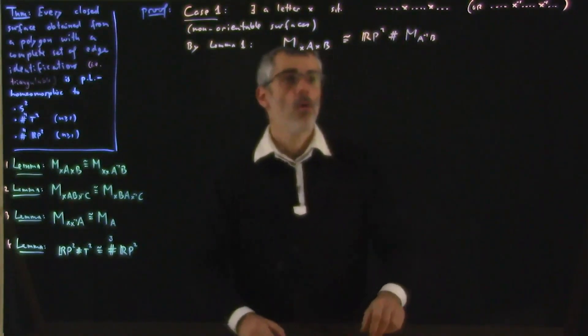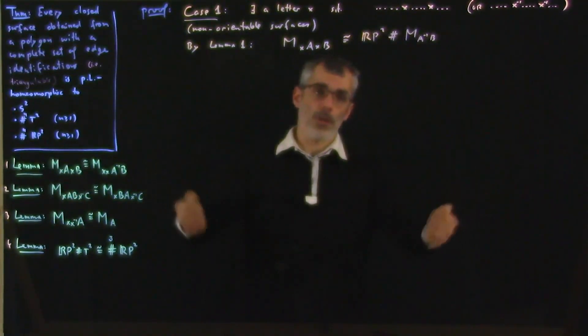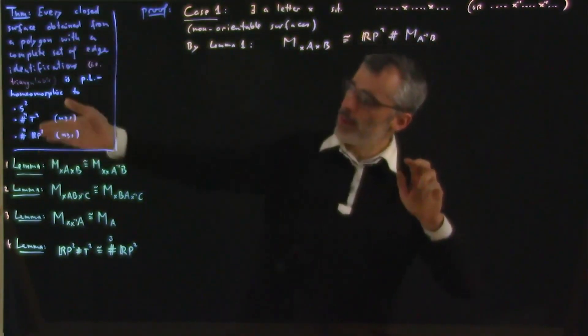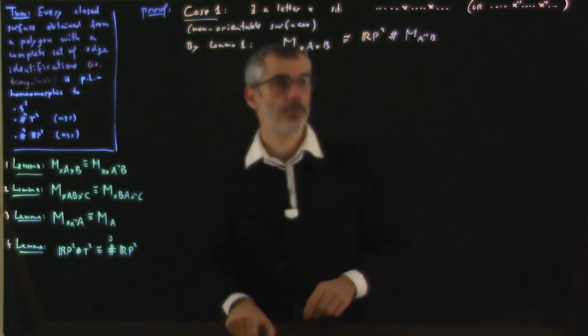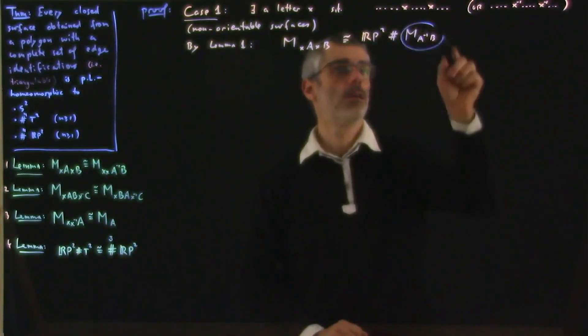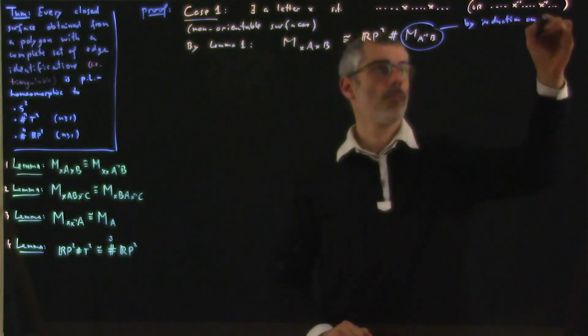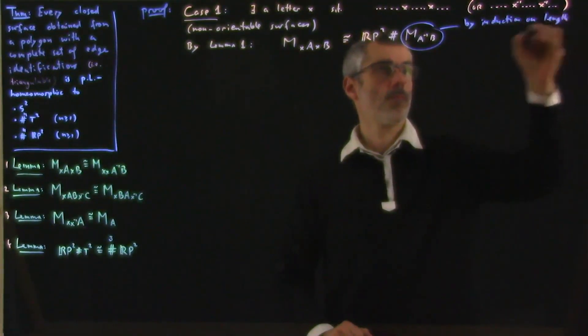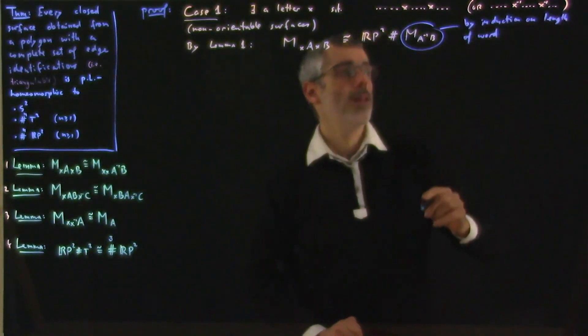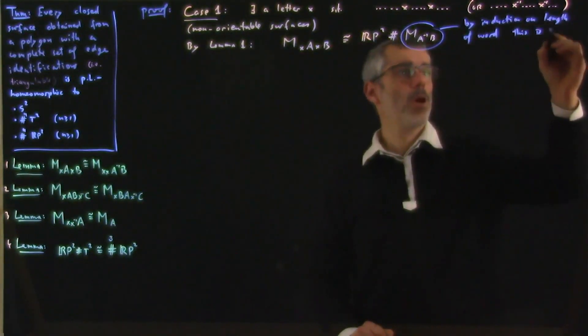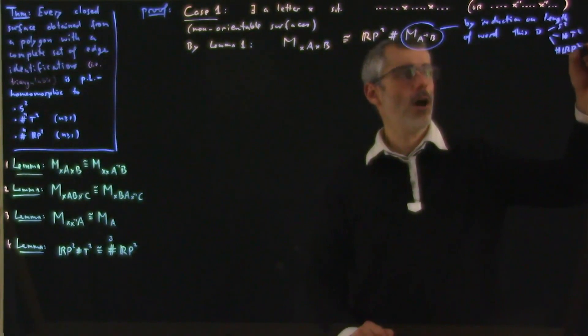And now we may invoke induction on the length of the word. So by induction on the length of the word, this is a shorter word, we may assume known the result of the theorem for this. So by induction on the length of the word, this is either S^2 or a bunch of P^2s or a bunch of RP^2s.